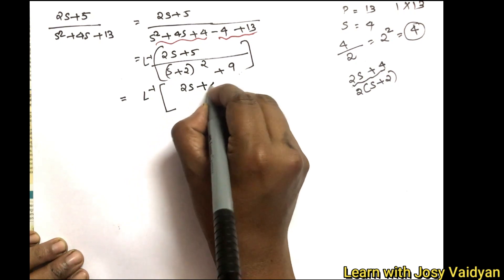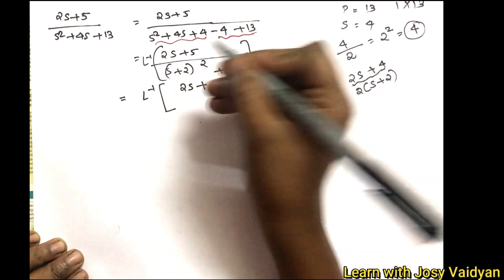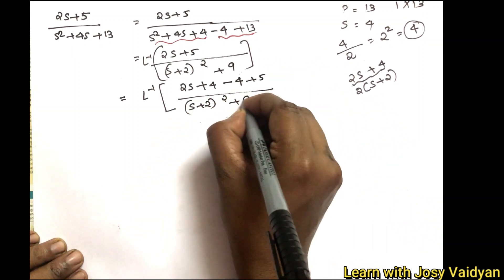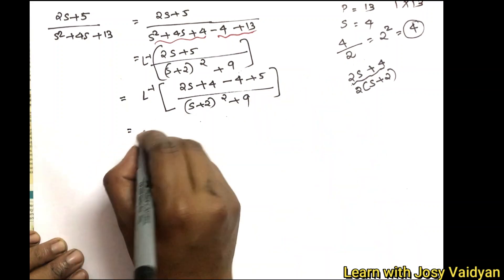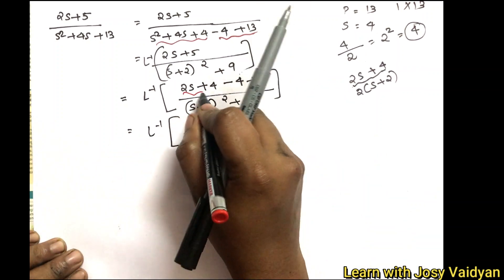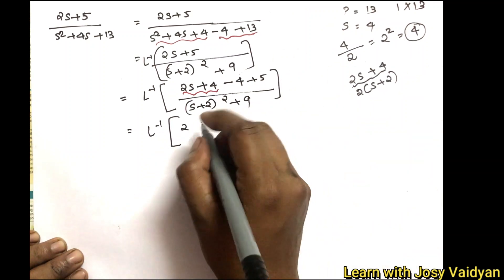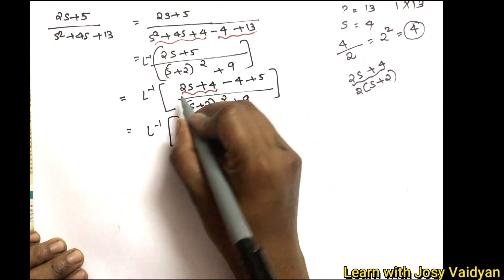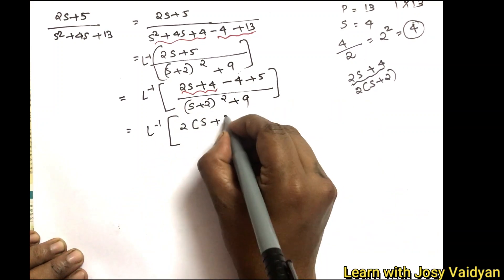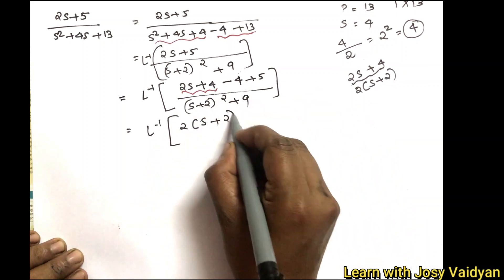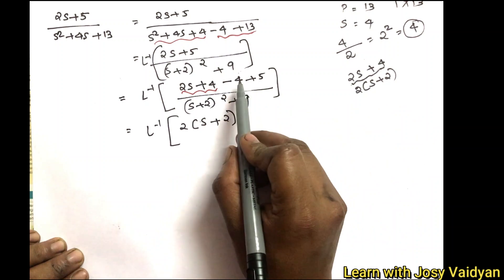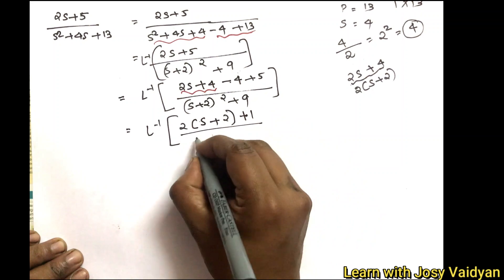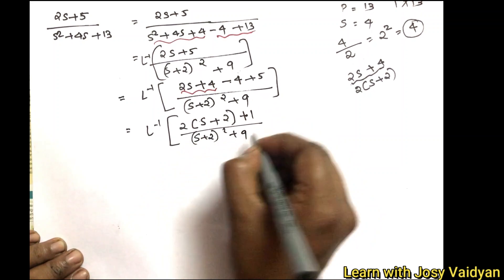We write 2s plus 4 minus 4 plus 5, which is plus 1, divided by s plus 2 the whole square plus 9, and we take the L inverse.